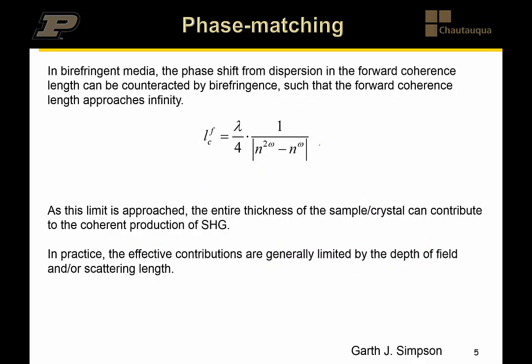What about phase matching? So let's consider the scenario where the refractive index of the double frequency is exactly equal to the refractive index of the fundamental. Now what would it take to make that happen? Well normally because of dispersion the refractive index of the double frequency is typically going to be higher than that of the fundamental. But if you have a birefringent medium then now you have a difference in refractive index for different polarizations of light.